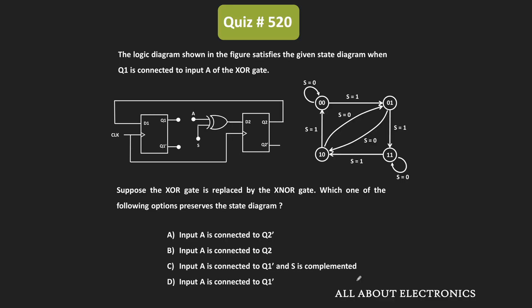Hey friends, welcome to the YouTube channel All About Electronics. So in this question, we have been given this logic diagram, and we have been given that when the output Q1 is connected to the input A of this XOR gate, then this logic diagram satisfies the given state diagram. So when this XOR gate is replaced by the XNOR gate, we have been asked to find which option preserves the given state diagram.